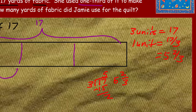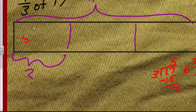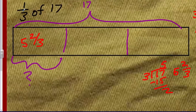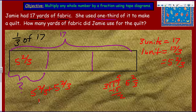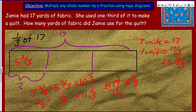We can check our work by adding five and two thirds three times to see if we get back to 17. This one unit — five and two thirds — is all we need. Now, what if the question said Jamie used two thirds instead of one third? We'd take five and two thirds and add one more five and two thirds. That gives us 10 and four thirds. Since four thirds equals three thirds plus one third, that simplifies to 11 and one third.